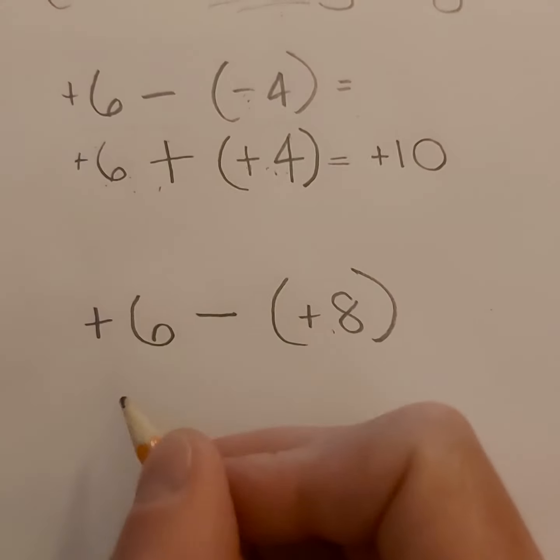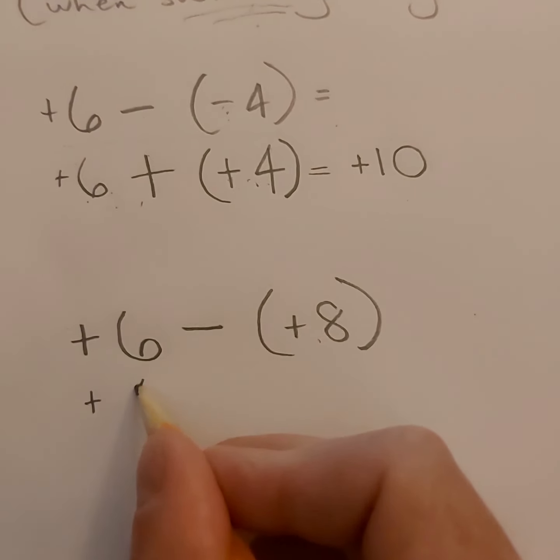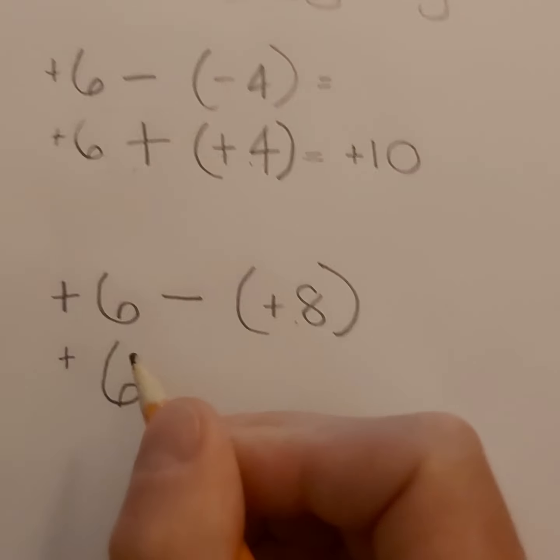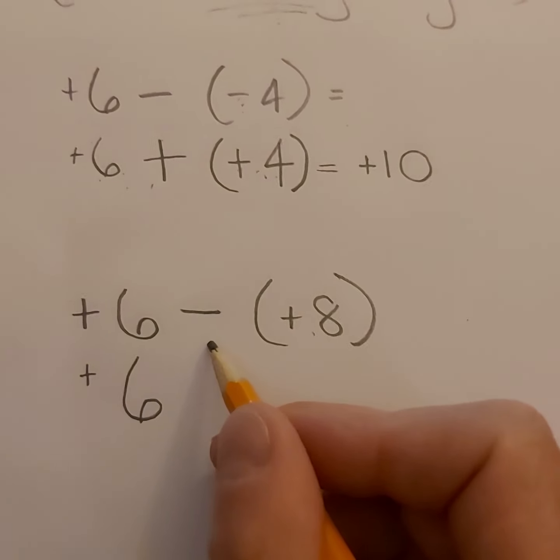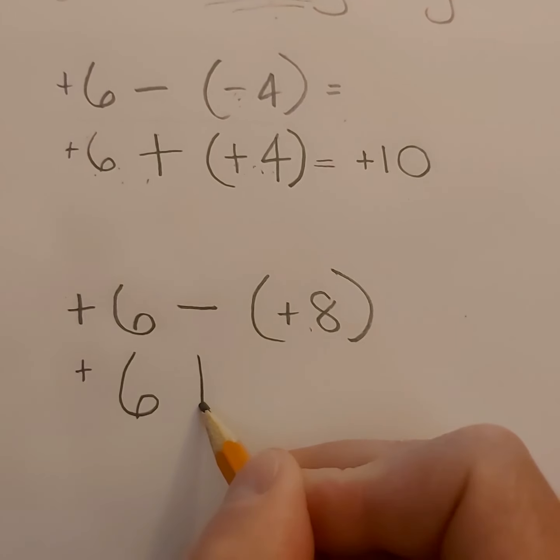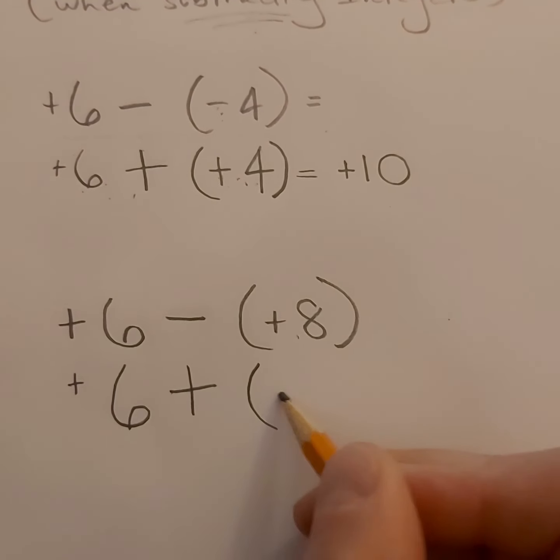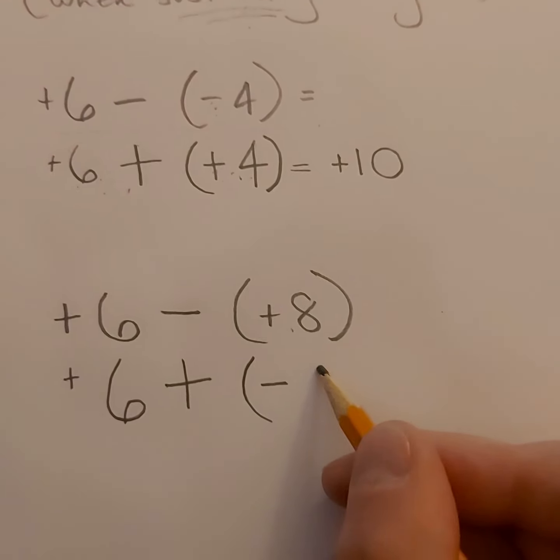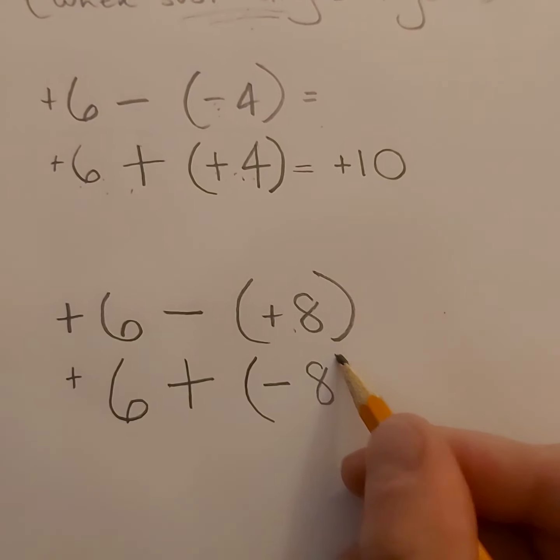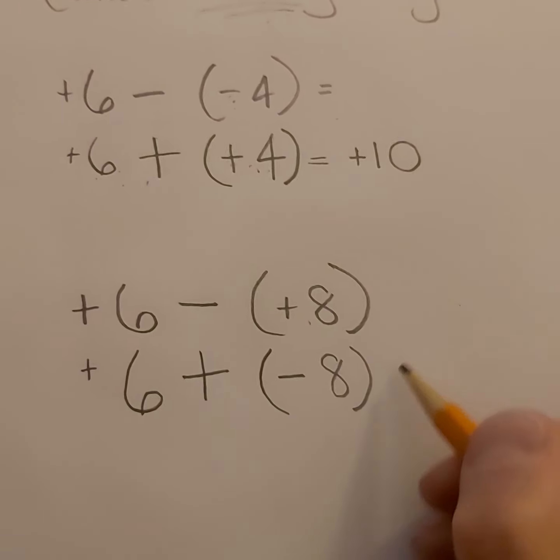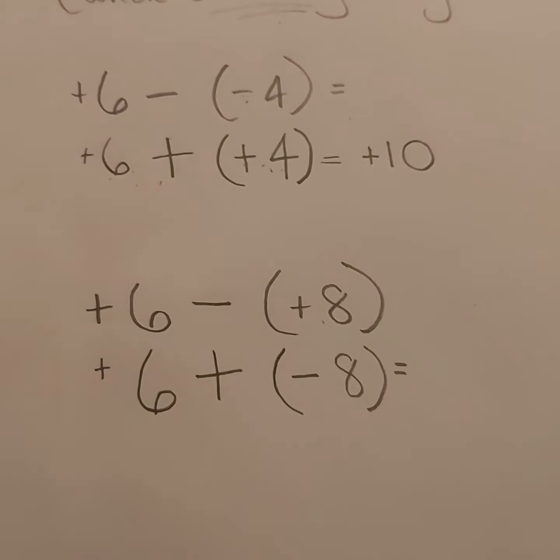So I'm gonna repeat the same process and rewrite the first number exactly as it is. So positive six, but now instead of subtraction, I'm doing addition. And that means I am now going to change the sign of the second number.